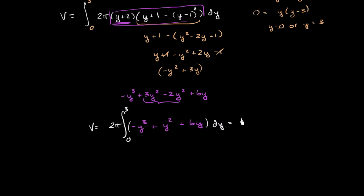This is going to be equal to 2π times the antiderivative of this business evaluated at 3 minus evaluated at 0. So the antiderivative of y to the third is y to the fourth over 4. So this is negative y to the fourth over 4. Antiderivative of y squared is y to the third over 3.